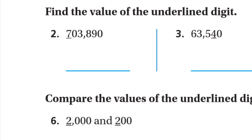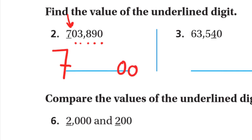Number 2: Find the value of the underlined digit. The 7 is in the hundred-thousands place, so it's seven hundred-thousands. Or we can write the 7 and make all digits to the right zeros — five zeros — giving 700,000.